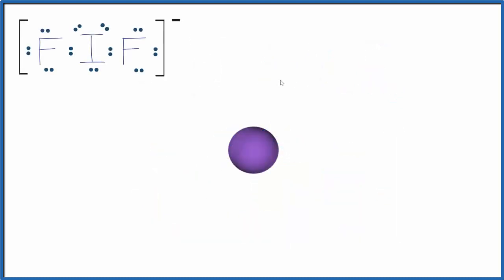So the central atom, that'll be the iodine atom, we'll add the two fluorine atoms. One, two. They spread out to be as far away from each other as they can.